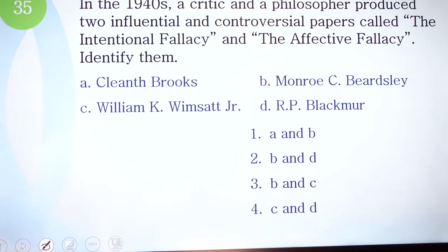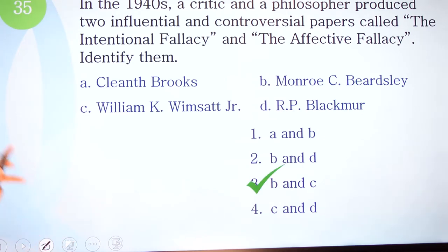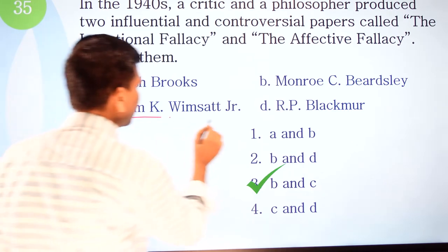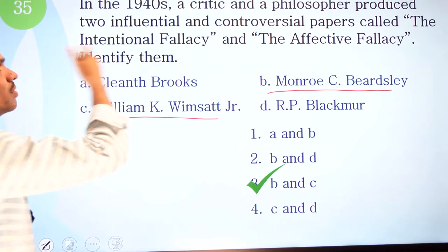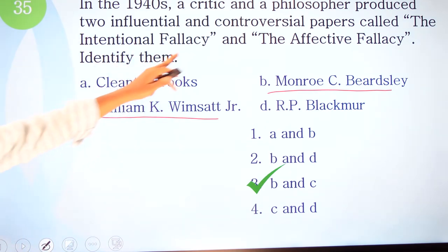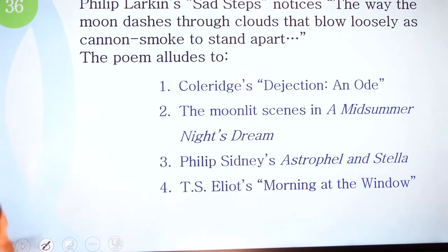Question 35: in the 1940s, a critic and a philosopher produced two influential and controversial papers called 'The Intentional Fallacy' and 'The Affective Fallacy.' Identify them. Options are: A) Cleanth Brooks, B) Monroe C. Beardsley, C) William K. Wimsatt Jr., and D) R.P. Blackmur. The correct option is B and C — Monroe C. Beardsley and William K. Wimsatt Jr. composed these influential papers.